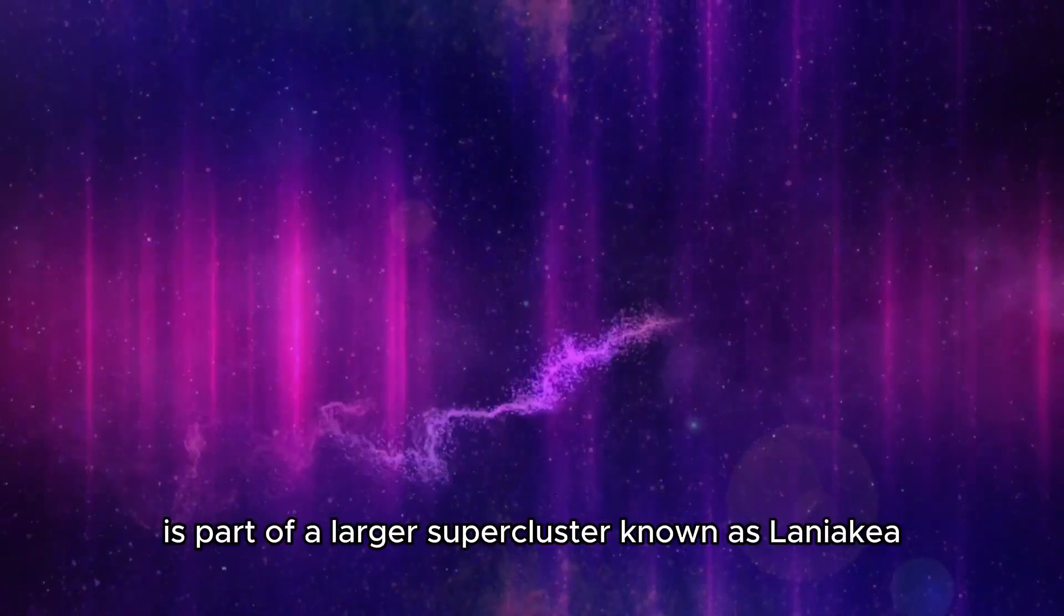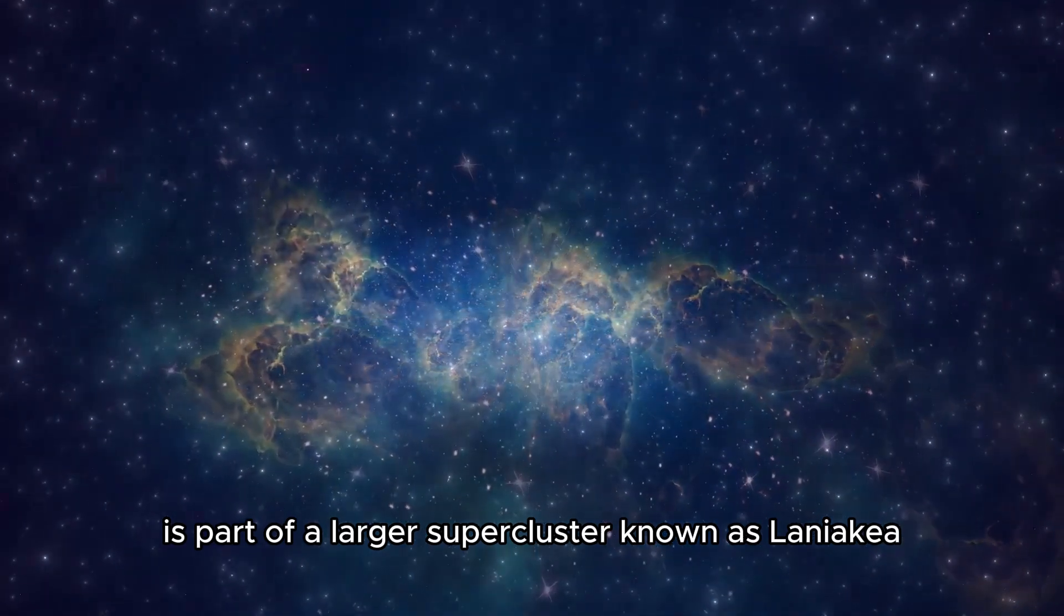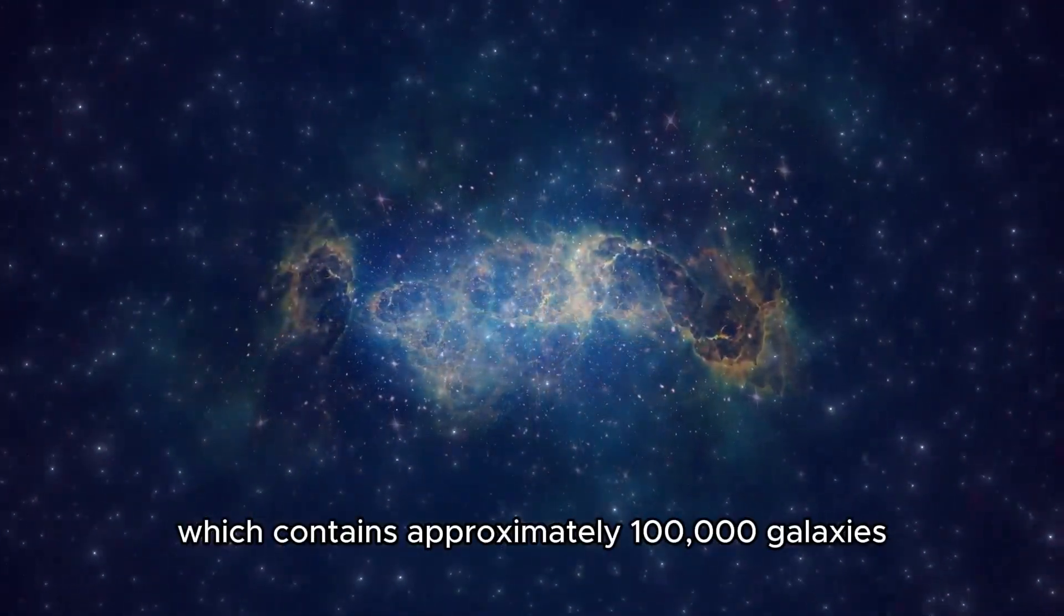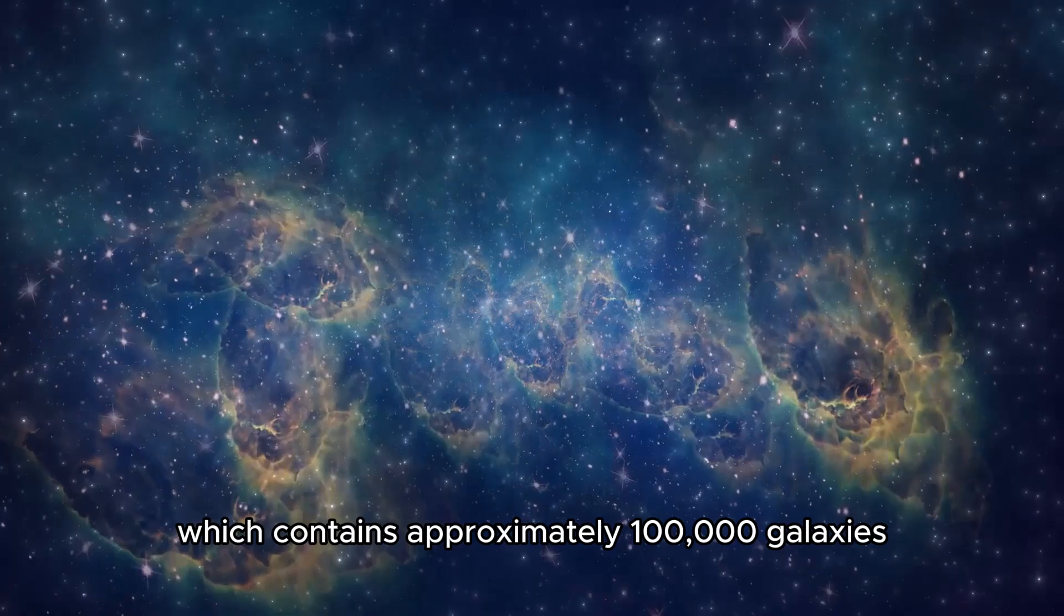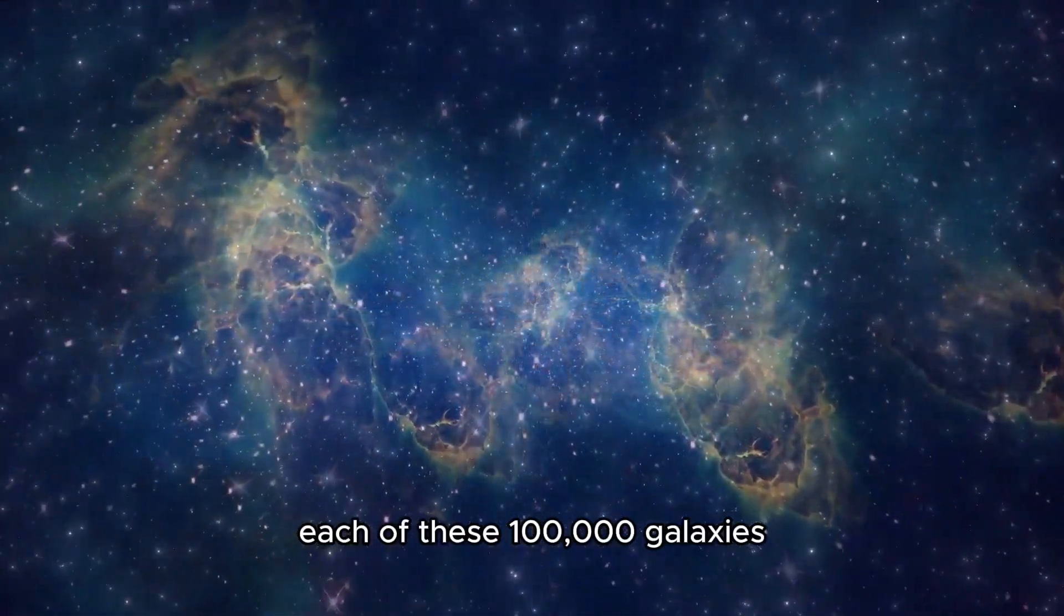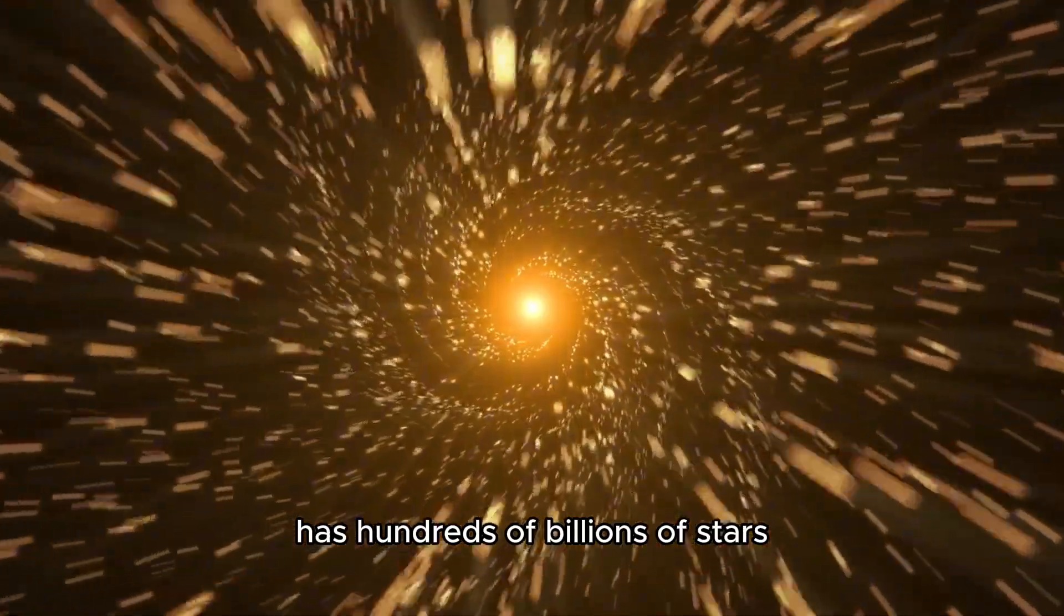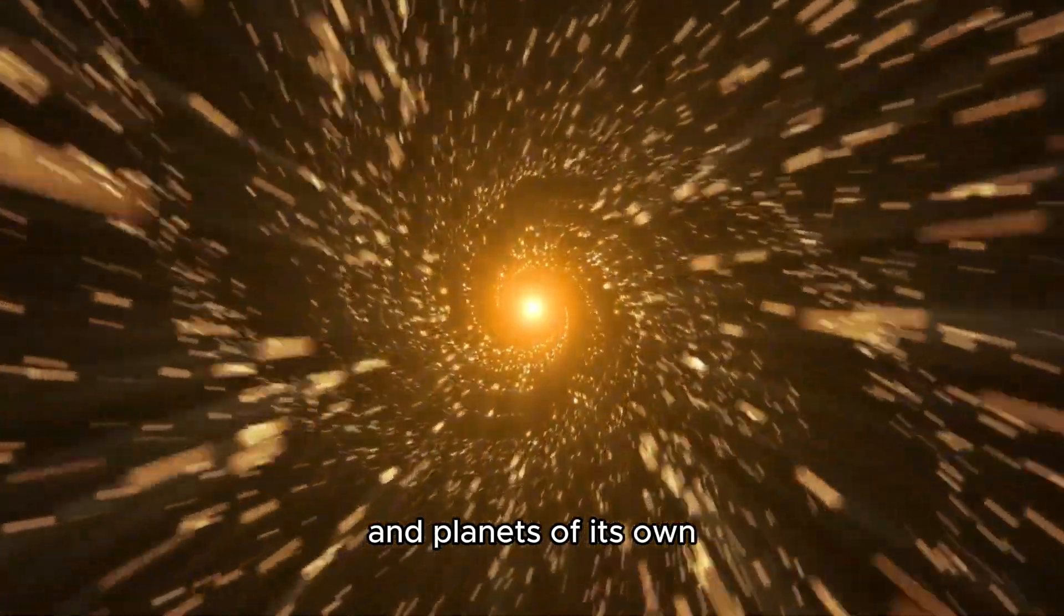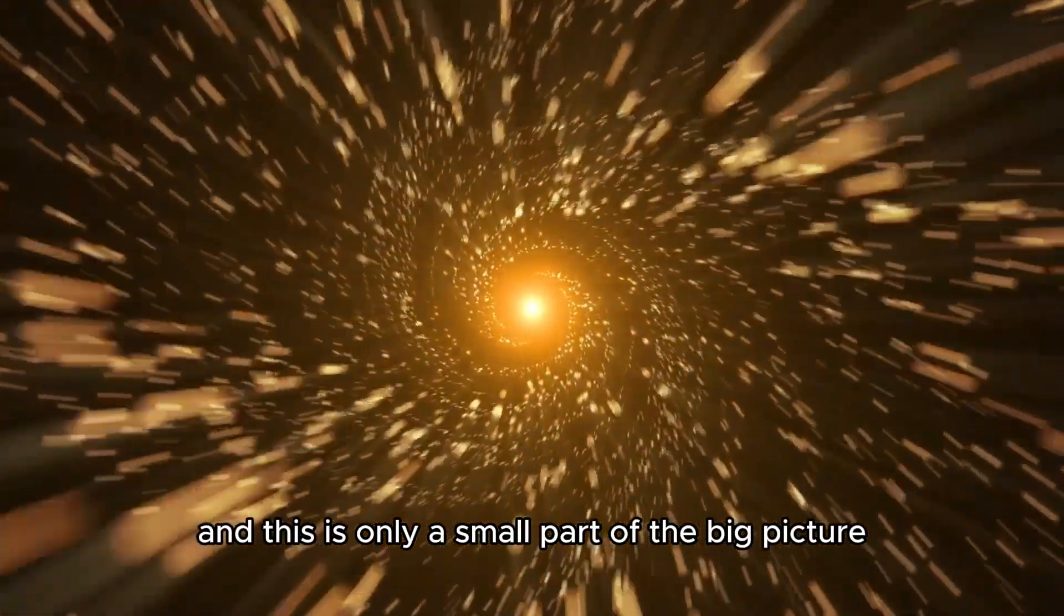And Virgo, in turn, is part of a larger supercluster known as Laniakea, which contains approximately 100,000 galaxies. Each of these 100,000 galaxies has hundreds of billions of stars and planets of its own. And this is only a small part of the big picture.